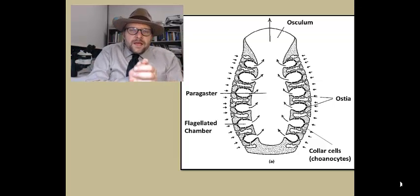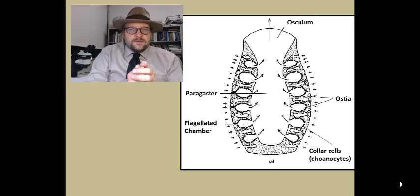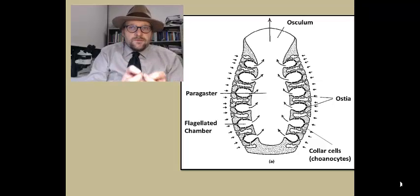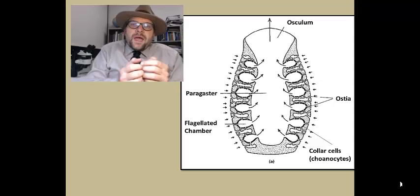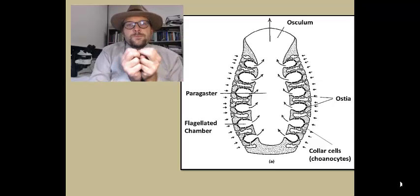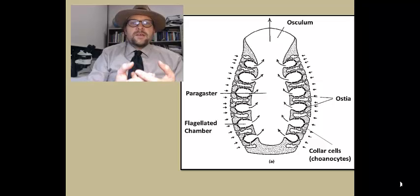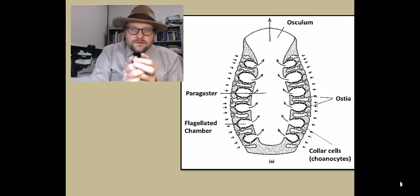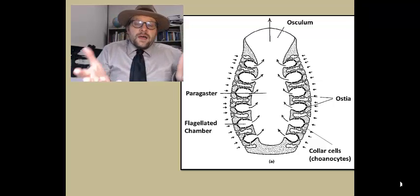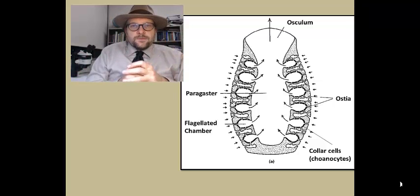These smaller chambers are lined with collar cells, or choanocytes, which ingest food such as small single-celled organisms that are drawn into these chambers. Nourishment from choanocytes is passed into amoebocytes — specialized cells that pass through the structure — helping to deliver nourishment to the cells that don't line these flagellated chambers.